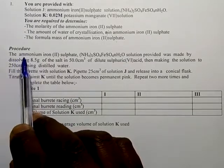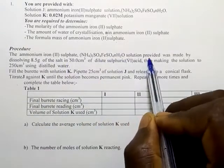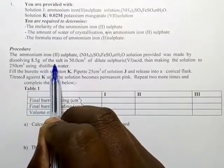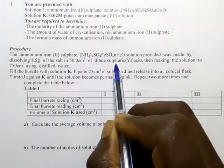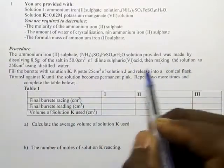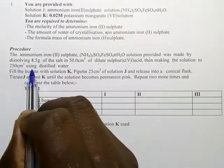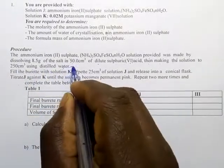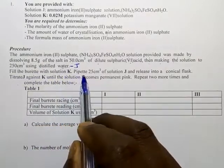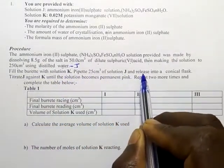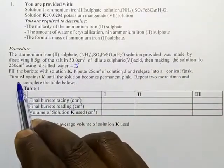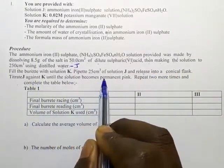The procedure: the ammonium iron(II) sulfate solution provided was made by dissolving 8.5 grams of the salt in 50 cm³ of dilute sulfuric acid, and then making the solution up to 250 cm³ using distilled water — this is Solution J. Fill the burette with Solution K, then pipette 25 cm³ of Solution J and release it into a conical flask.